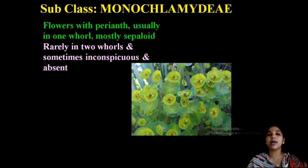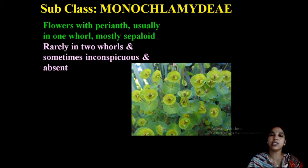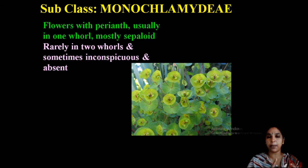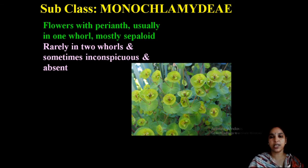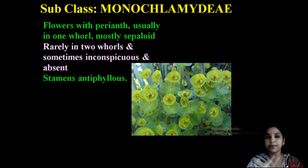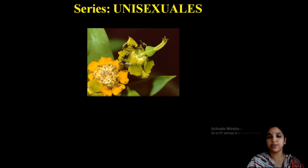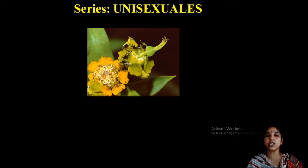Or rarely in two whorls, and sometimes they are inconspicuous or absent. There is no differentiation into petals or sepals. They may be reduced to sepal-like structures or called perianth — either colored or greenish. Sometimes they may be absent or inconspicuous. Such members are included in the subclass Monochlamydae. Stamens are antipetalous — opposite to the perianth. Euphorbiaceae comes under the series Unisexuals.